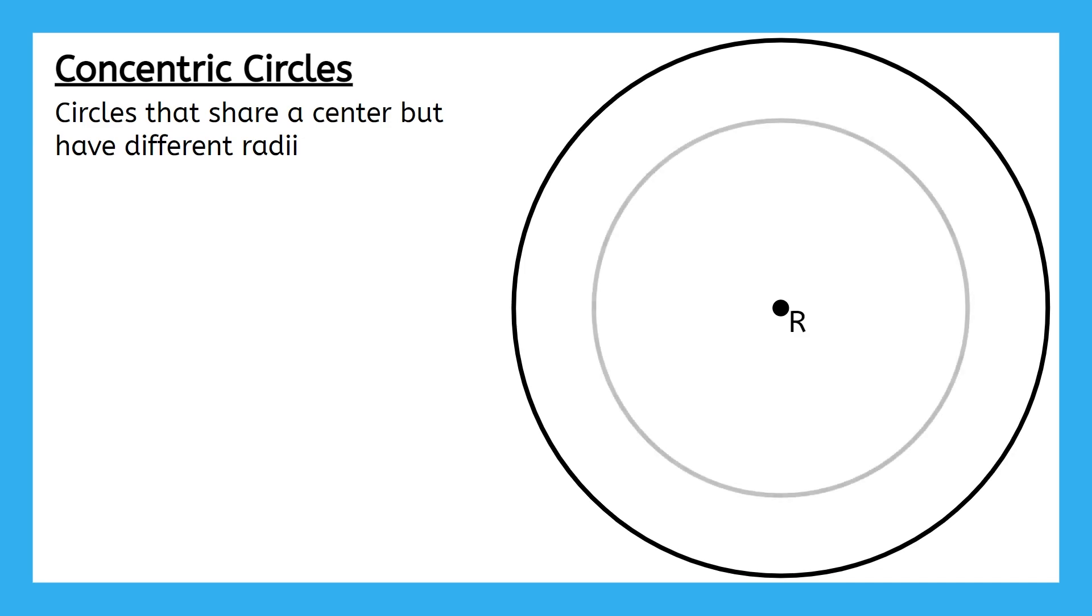But when I draw in a concentric circle, it would also be called circle R, since it has the same center. But wait a second. They can't just have the same name, how will people know which one we're talking about? How do you think we can differentiate between these two circles? Does this spark any ideas?